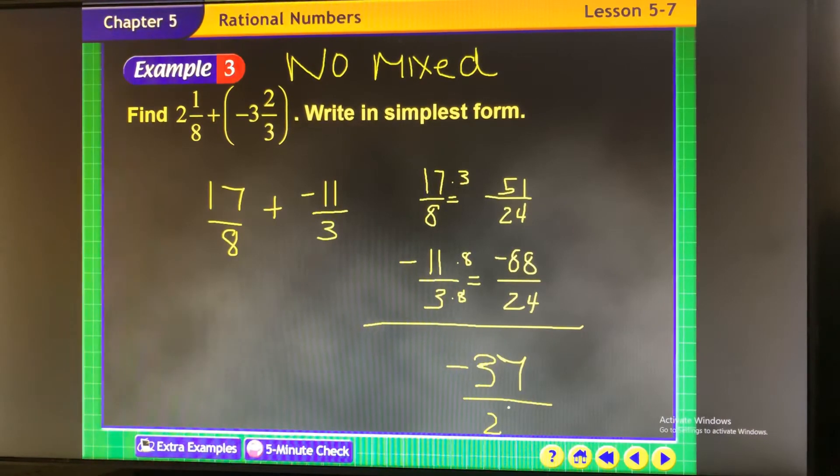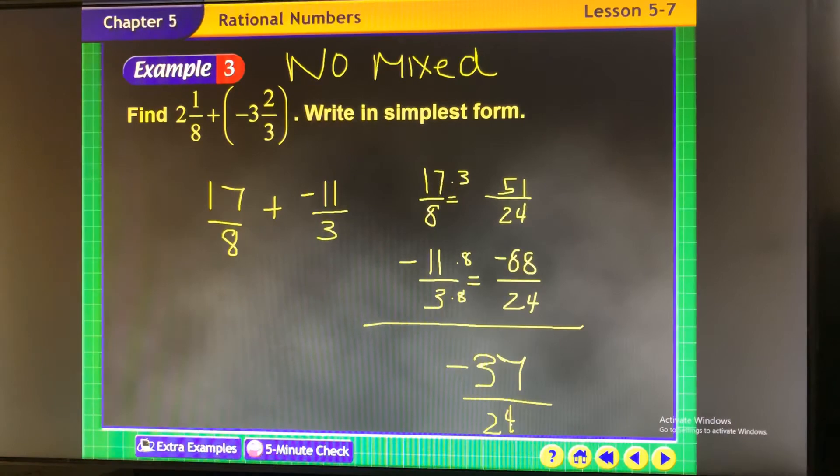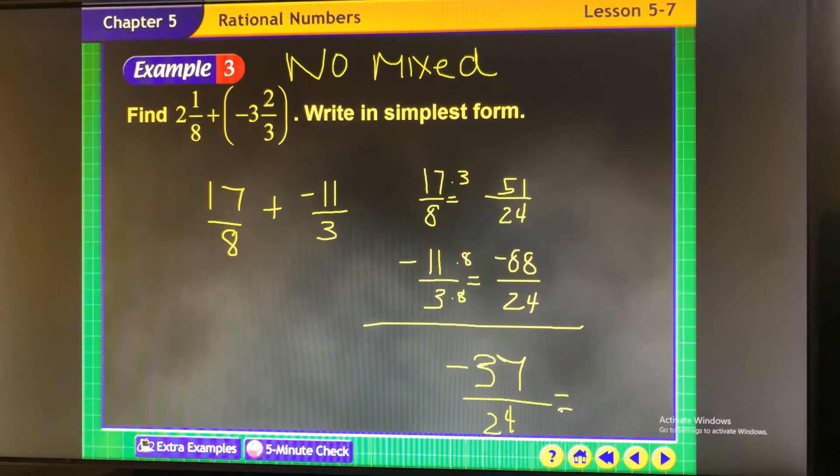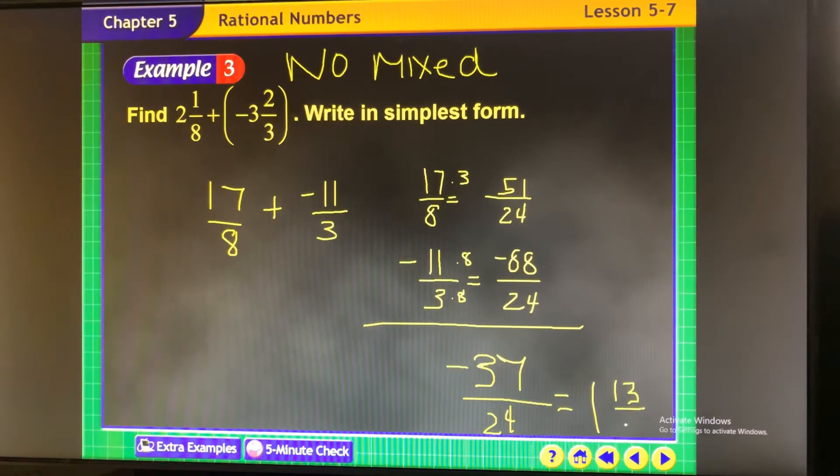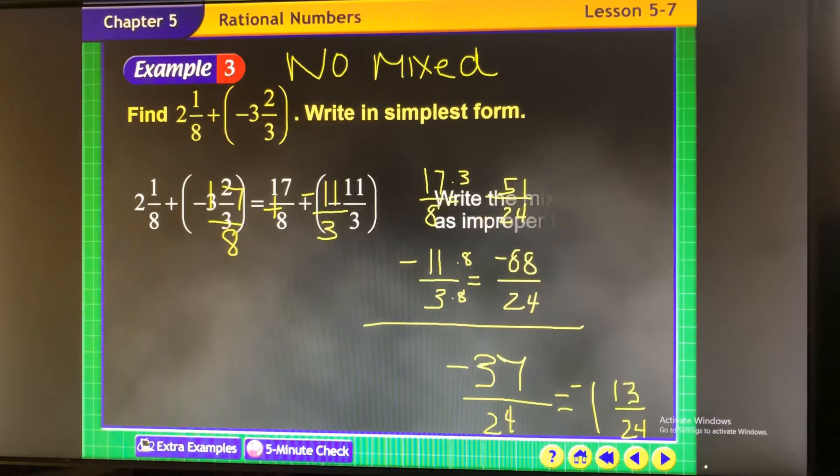So negative 37 over 24. And then you're going to say how many groups of 24 are in 37. There's one. And then you're going to subtract to find out how many are left once you take 24 out of 37. And there you go. And it's negative. Negative 1 and 13 24ths.